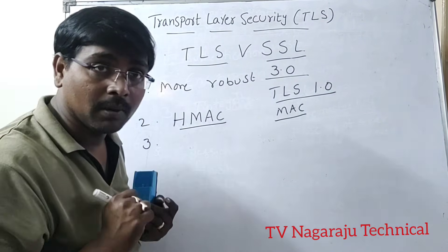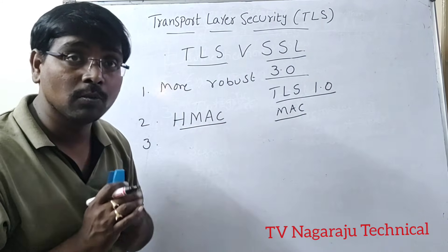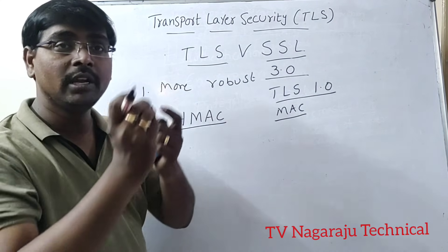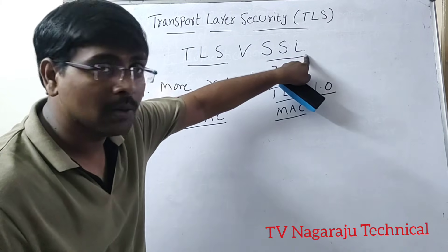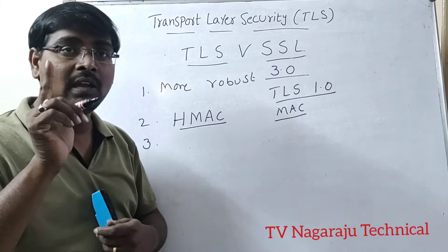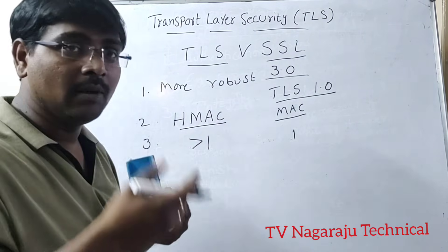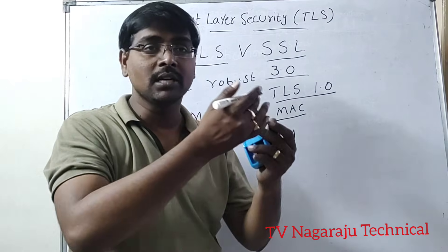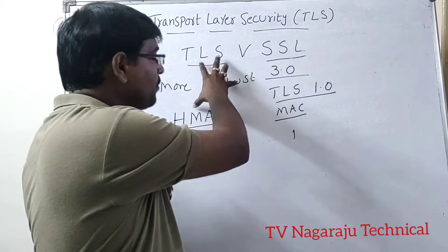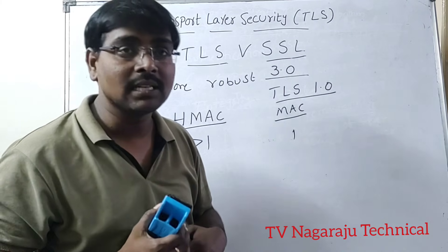Another difference involves the alert protocol. Both TLS and SSL have an internal alert protocol for sending error messages. In SSL, you can send only one alert message at a time. But in TLS, you can send more than one alert message to both parties — both the client and server — simultaneously. These are some of the advantages of TLS compared to SSL.